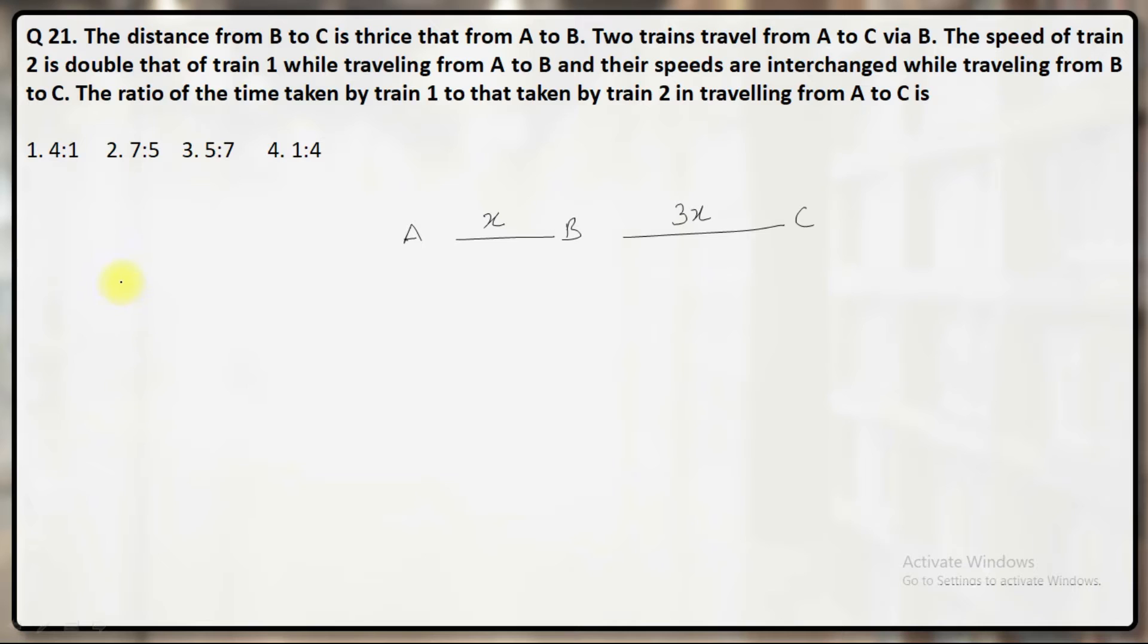And speed of first train, speed of second train. While going from A to B, the speed of train 2 is double that of train 1. So train 1 speed, let us say X, train 2 will become 2X.